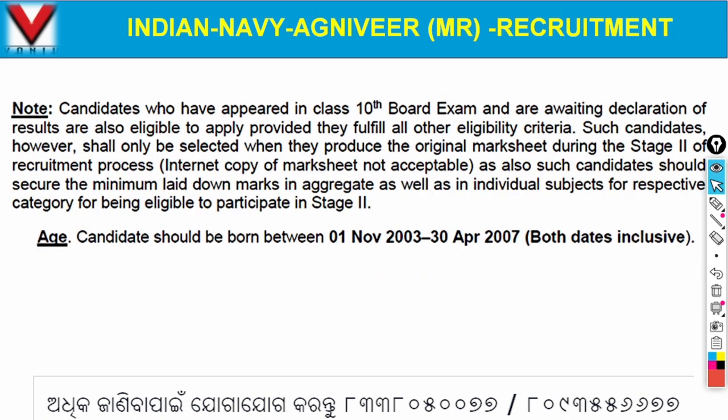Important note: candidates who have appeared in class 10th board exam and are awaiting declaration of results are also eligible to apply, provided they fulfill all other eligibility criteria. Such candidates, however, shall only be selected when they produce the original mark sheet during stage 2 of the recruitment process. Such candidates should also secure the minimum laid down marks in aggregate as well as in individual subjects for their respective category to be eligible to participate in stage 2.